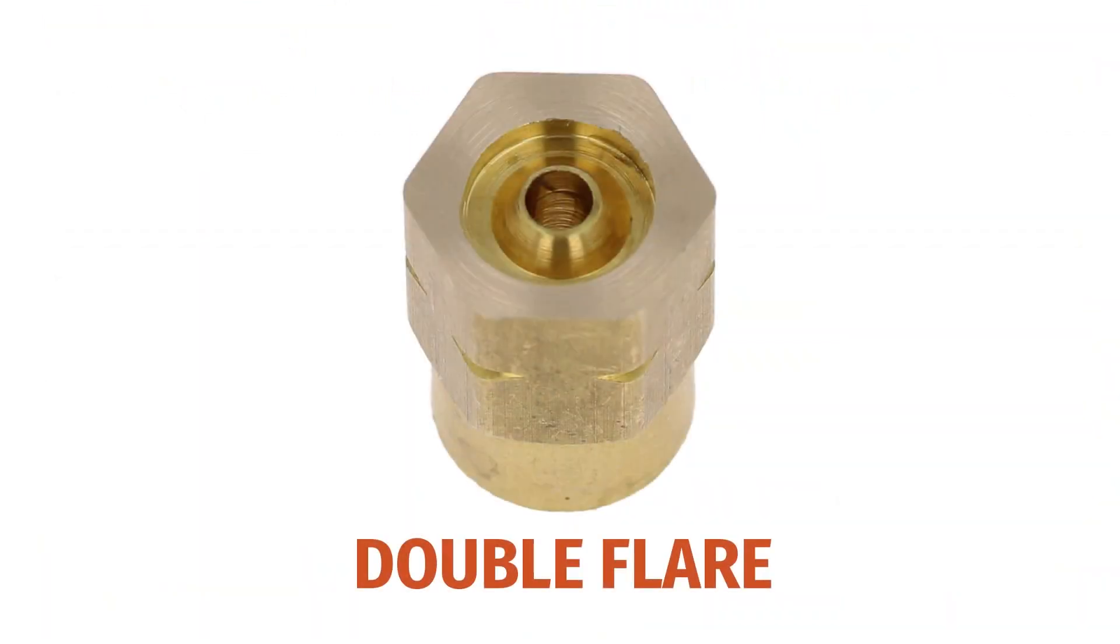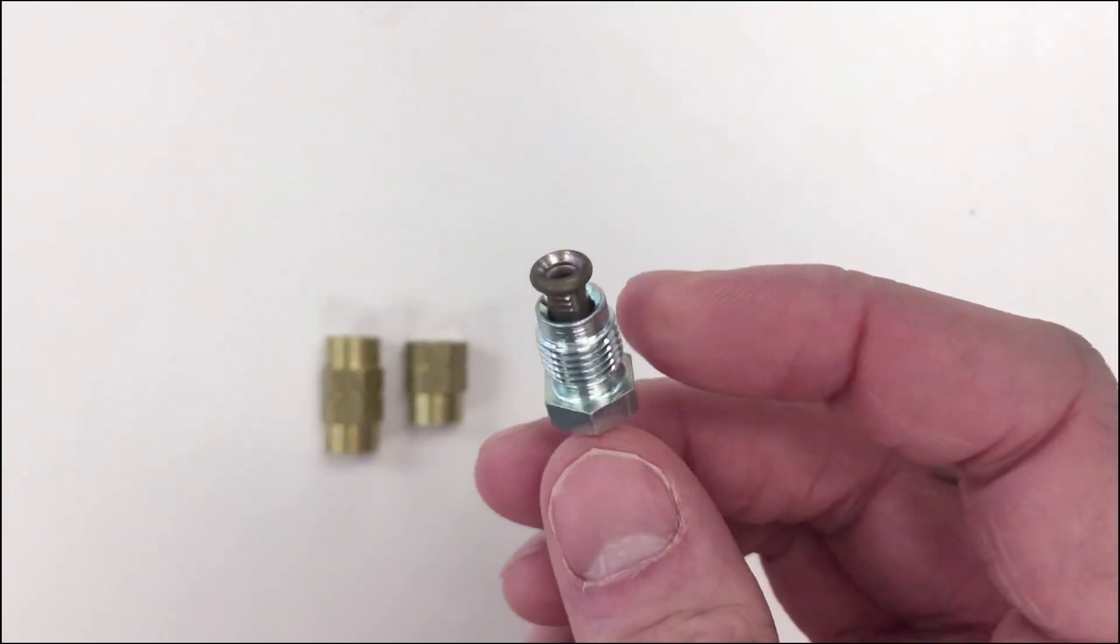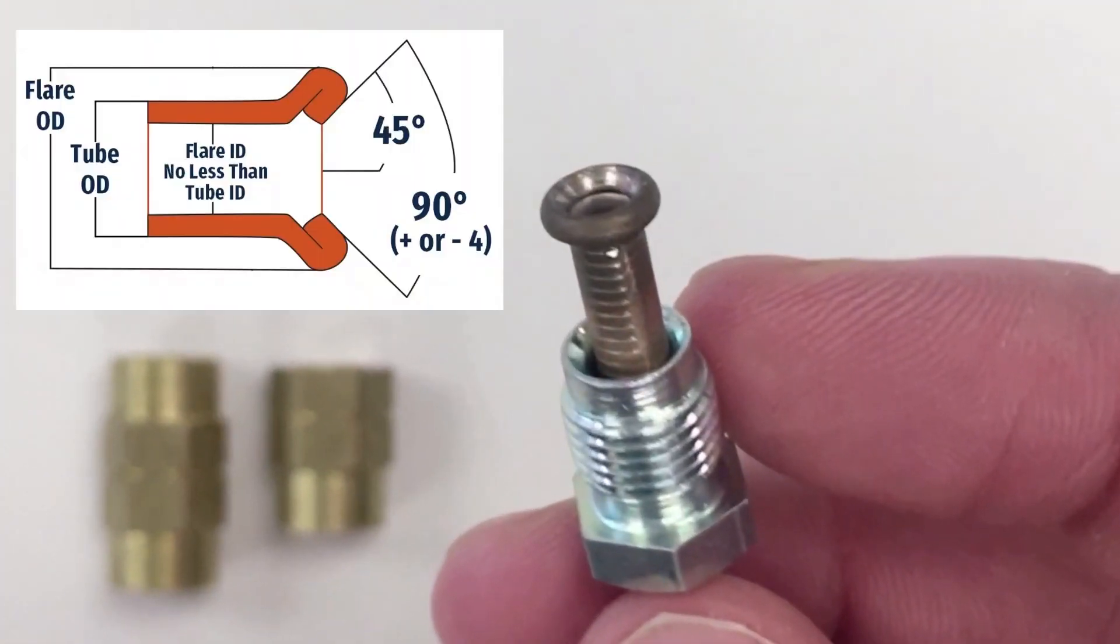Next up is the double flare, also known as an inverted flare. It is similar to the bubble flare, but requires an extra step of crimping inward, which doubles the thickness at the flare end.